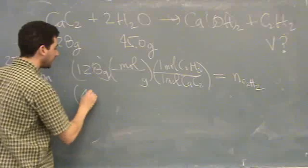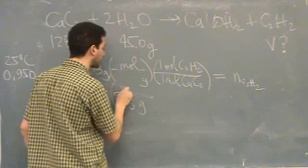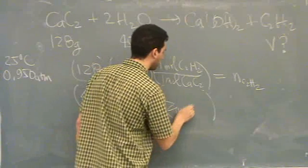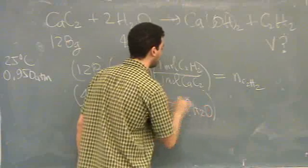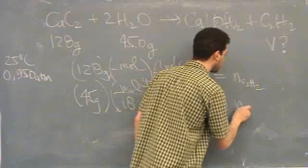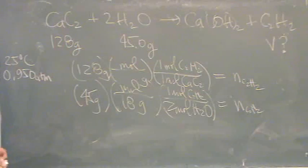Okay, I'll just finish it. And then 45 grams times the molar mass of water, which is 18 grams per mole. And then 2 moles of water for every 1 mole of C2H2. This is also equal to the moles of C2H2. You just got to see the smaller one, and that's N.